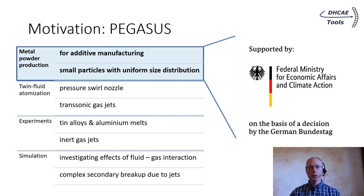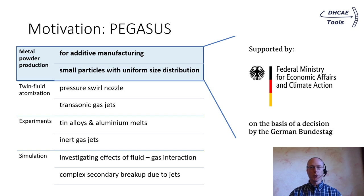Why are we working on VoF-to-Lagrangian extensions? Several VoF-to-Lagrangian approaches already exist in OpenFOAM, but the motivation for re-implementation comes from the current project we are working on: the PEGASOS project. The project is funded by the BMWK and the main goal is the cost and energy efficient production of metal powder for additive manufacturing.